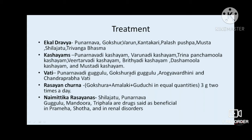In diabetic kidney disease, both guggulus are preferred because kidney disorders coexist with cardiovascular events. Roukeyadini is used for clearing srotosanga — opening the channels — acting as a lekhana dravya. Then Chandraprabha Vati is also used.